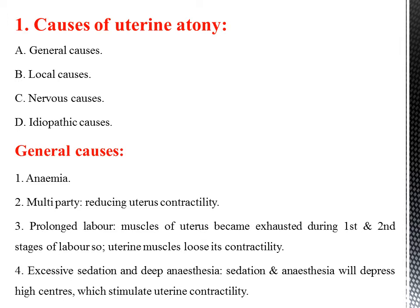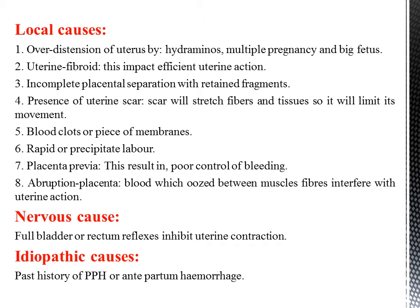Causes of uterine atony — General causes: anemia, multipara, prolonged labor, excessive sedation, and deep anesthesia. Local causes: over-distension of the uterus, uterine fibroids, incomplete placenta separation with retained fragment, presence of uterine scar, blood clot or piece of membrane, rapid or precipitate labor, placenta previa, and abruption placenta. Nervous causes: full bladder or rectum reflexes that inhibit uterine contraction. Idiopathic causes: past history of postpartum hemorrhage and antepartum hemorrhage.